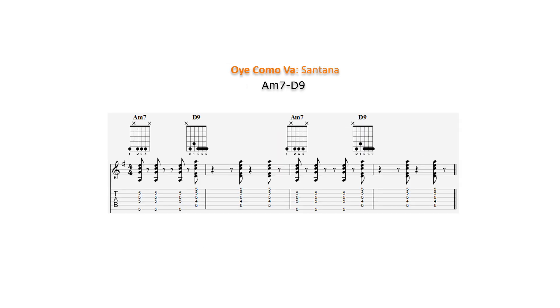Since the only two chords used in Oye Como Va by Santana are A minor 7 and D9, the key signature is G major, which is the parent scale of A Dorian.